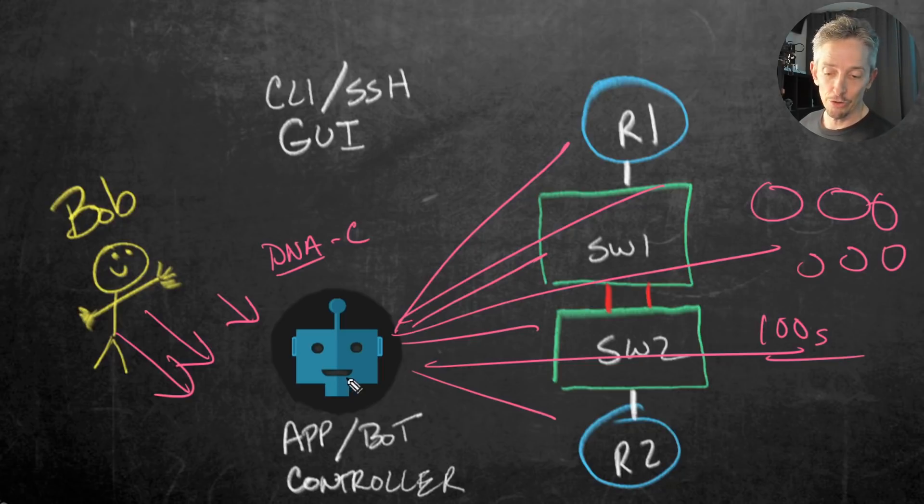Bob could say, 'I want this to happen,' and then the controller would go out to all the devices and make it happen. Because the controller is a lot faster, we might want to give it a special method for communicating with the network devices — instead of using SSH and logging in with show commands and config changes. We might want to use some special language between that controller and the network devices. That interface between a controller and the devices it's managing is referred to as an API — an Application Program Interface — because it's the interface that the program, the controller, is using to communicate with those devices.